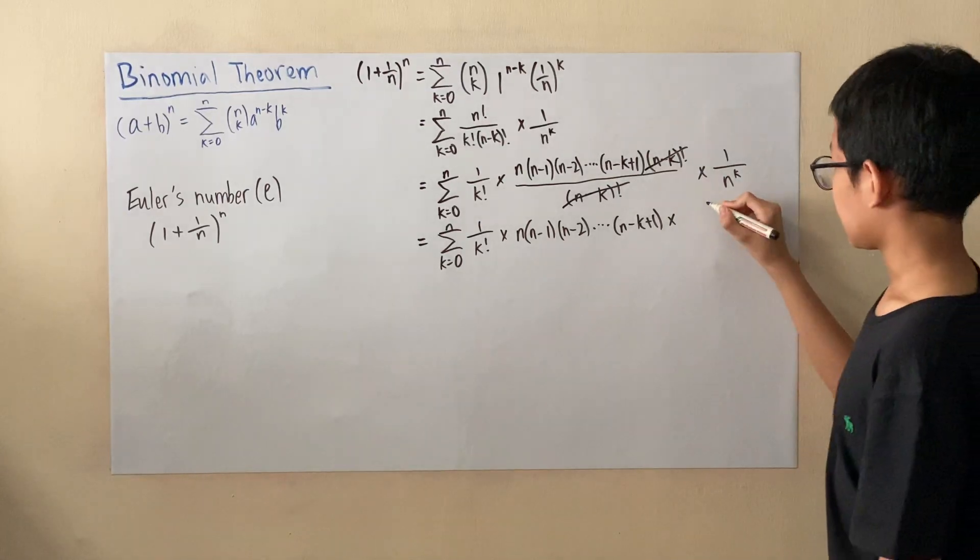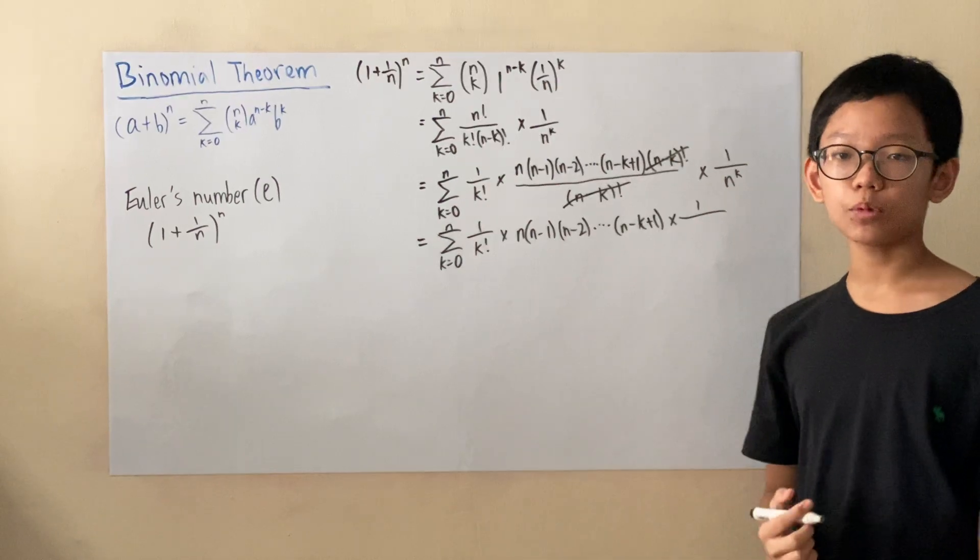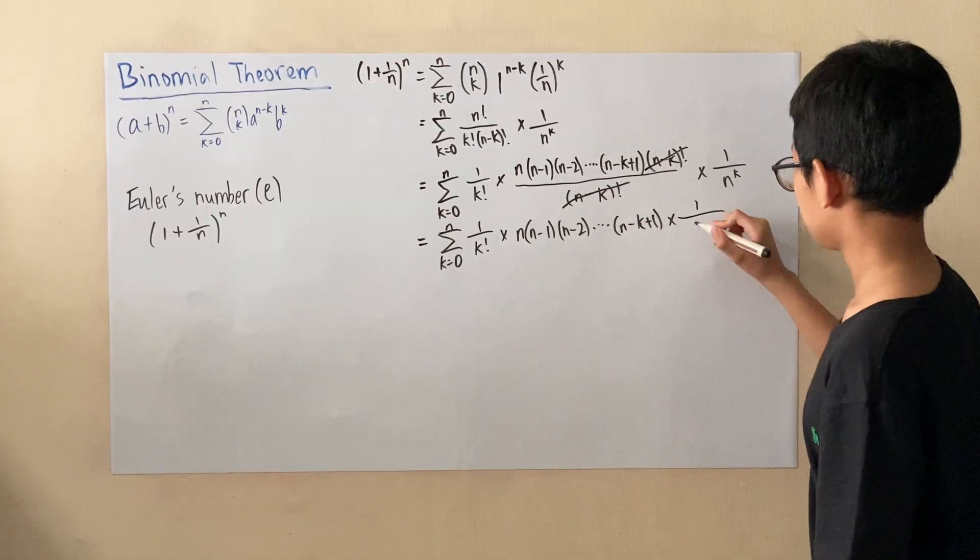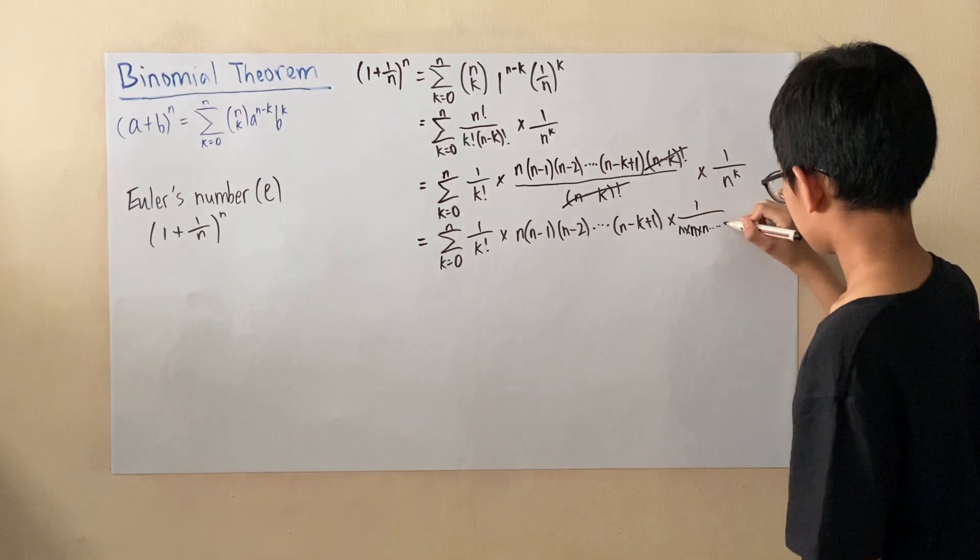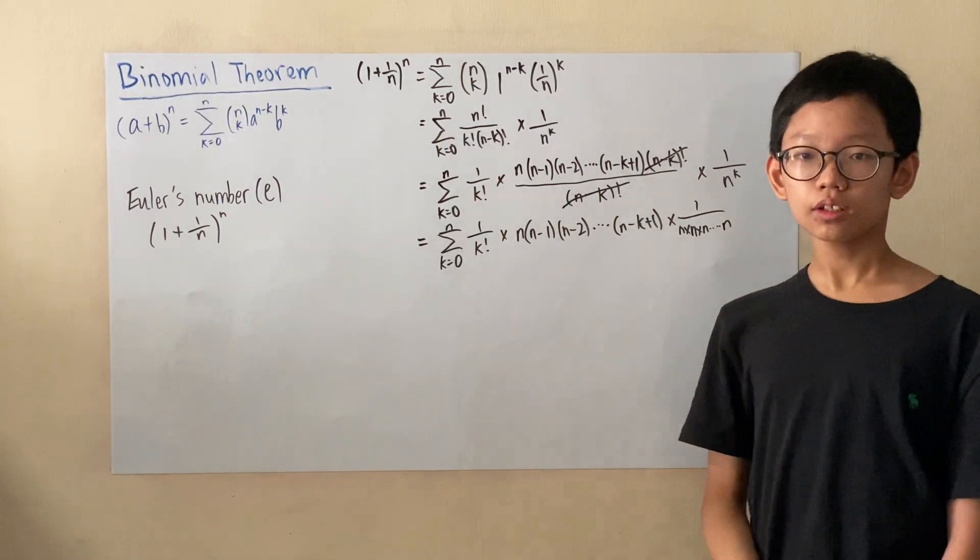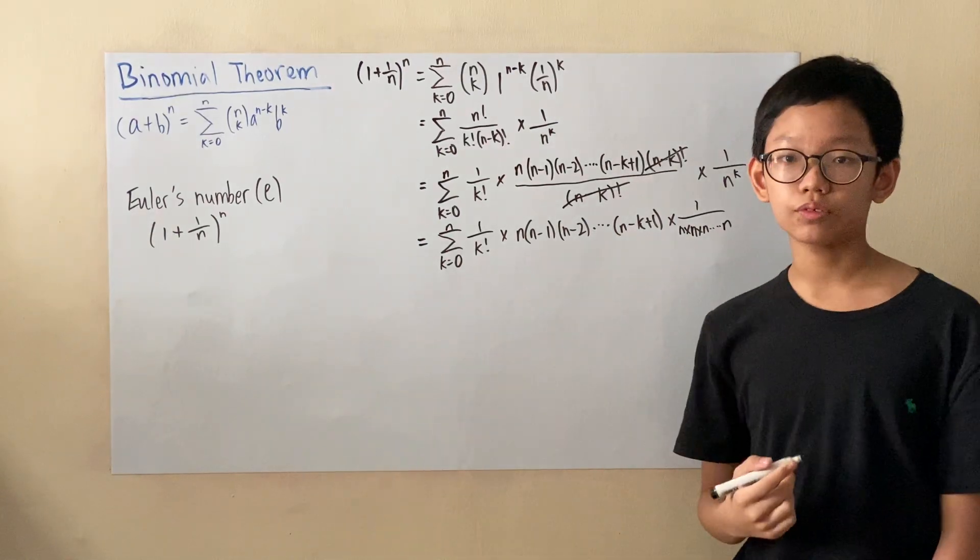And over here, I'll rewrite this in another way because n^k basically means n multiplied by itself k times. So now that we have this, I want to combine these two together into one big fraction.